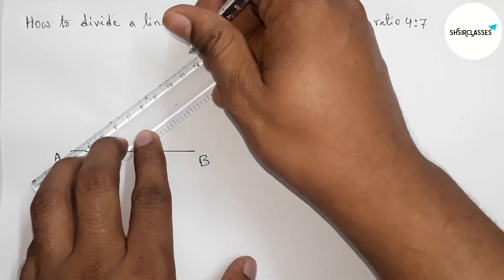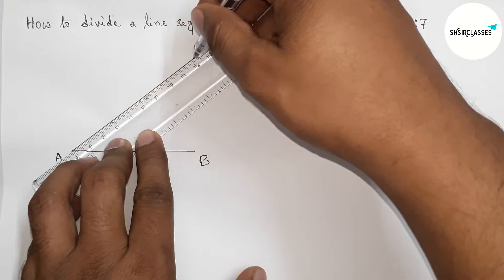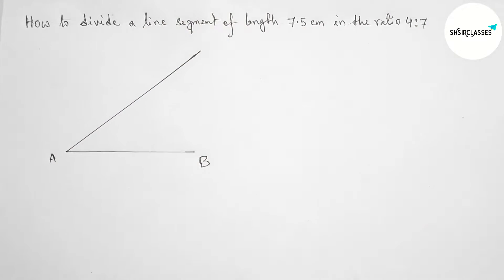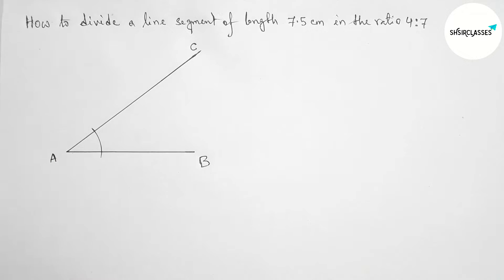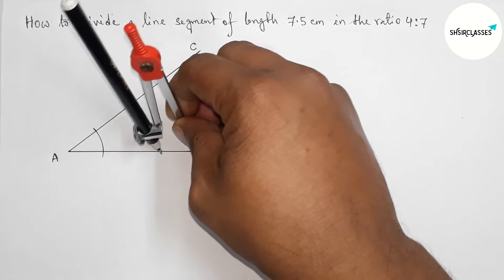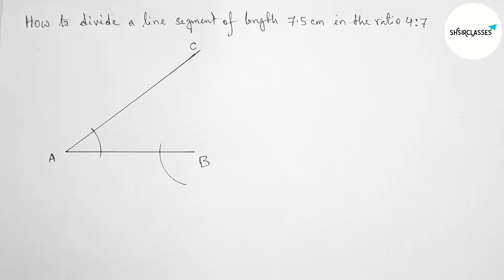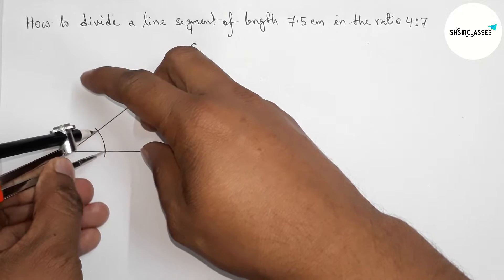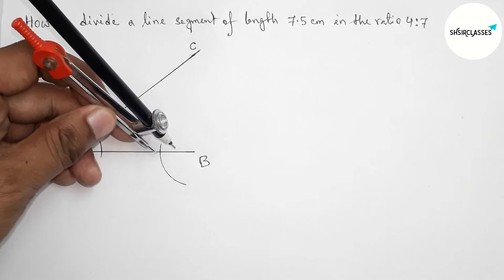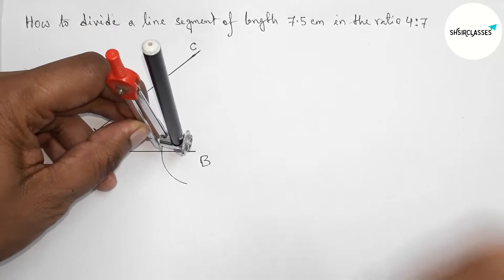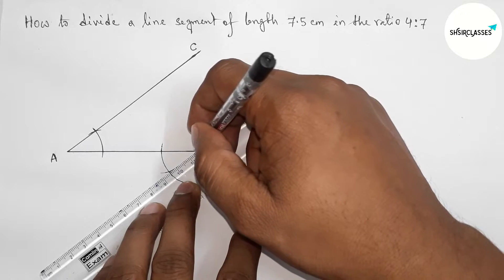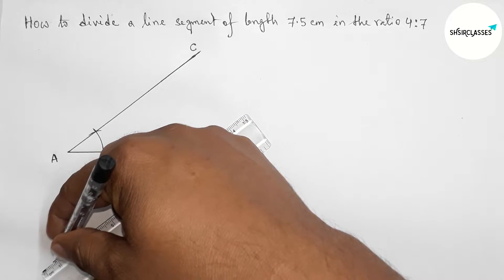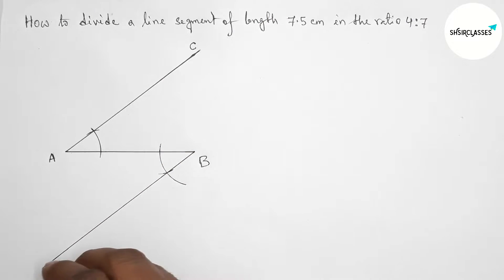Now drawing an acute angle at point A with the help of a scale, taking point C here. With the help of a compass, taking this angle, now putting the compass on point B and drawing an arc in a similar way. Taking this length, measuring it, then putting the compass on B and cutting an arc in the same way.